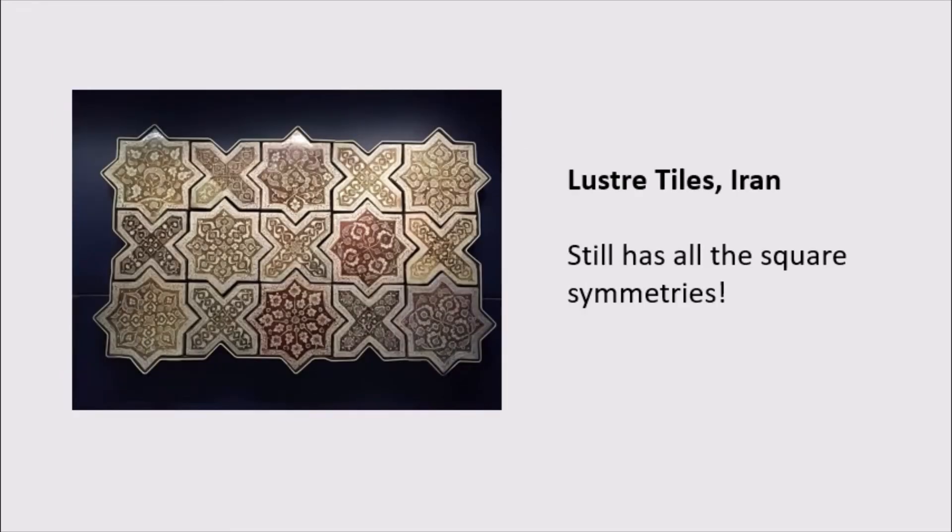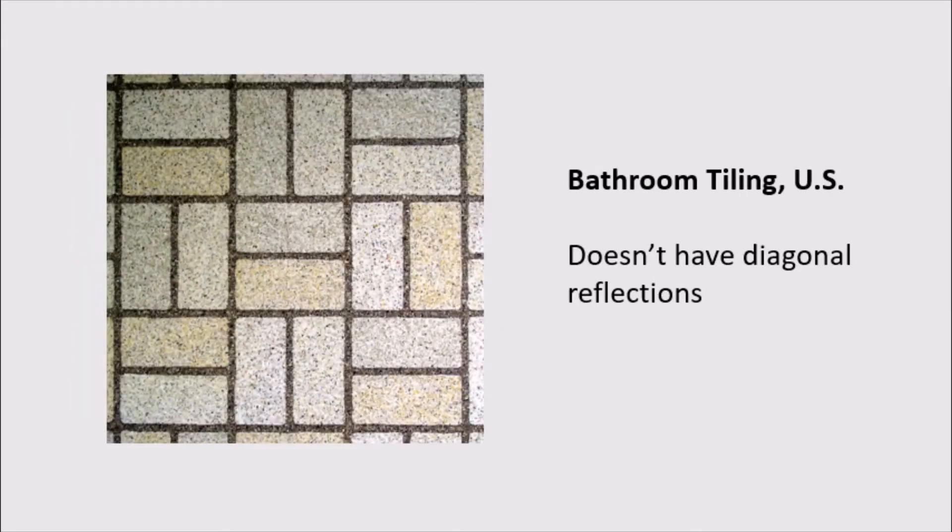And something like these tiles from Iran, they also have the square symmetries despite not being square shaped. We can also have wallpaper groups with just some of the square symmetries. So for example, in this bathroom tiling, if we take this yellow point as our origin, we see that we have all four rotations and reflections along the vertical or the horizontal axes. But what we don't actually have is diagonal reflections. Trying to reflect along the diagonal line would turn all the horizontal tiles into vertical tiles and so it wouldn't look the same anymore.